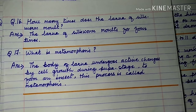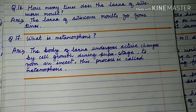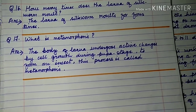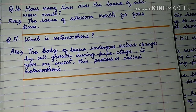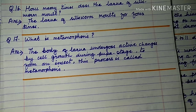Question number 17: What is metamorphosis? The body of larva undergoes active changes by cell growth during the pupal stage to form a fully grown insect. This process is called metamorphosis.